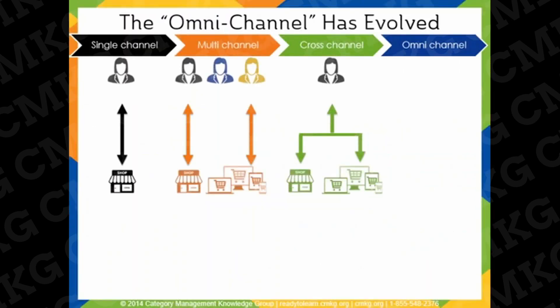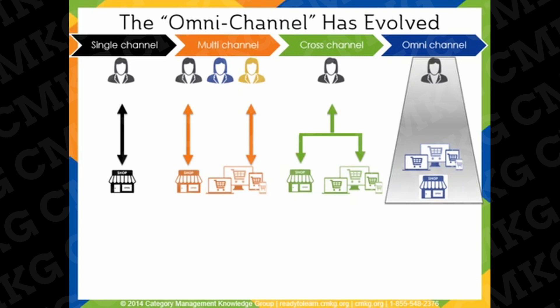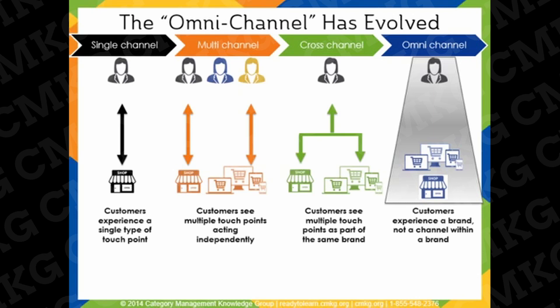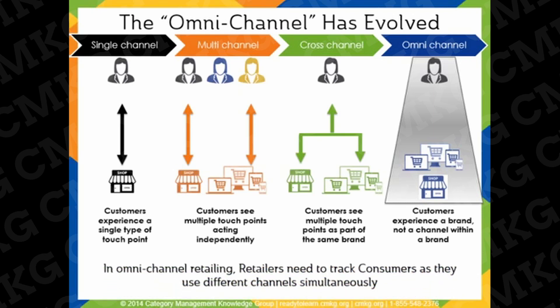Omni-channel retailing is very similar to, and an evolution of, multi-channel retailing. The biggest difference is that it's concentrated more on a seamless approach to the consumer experience through all available shopping channels — like mobile internet devices, computers, bricks-and-mortar, television, catalog, and so on. The omni-channel consumer wants to use all channels simultaneously, and retailers using an omni-channel approach need to track them across all channels.